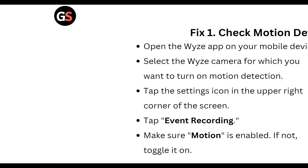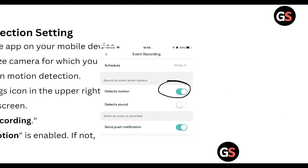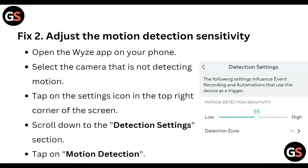First of all, check the motion detection setting. Open the Wyze app on your mobile device, select the Wyze camera for which you want to turn on motion detection. Tap the settings icon in the upper right corner of the screen, tap into Event Recording, and make sure motion is enabled. If not, toggle it on.